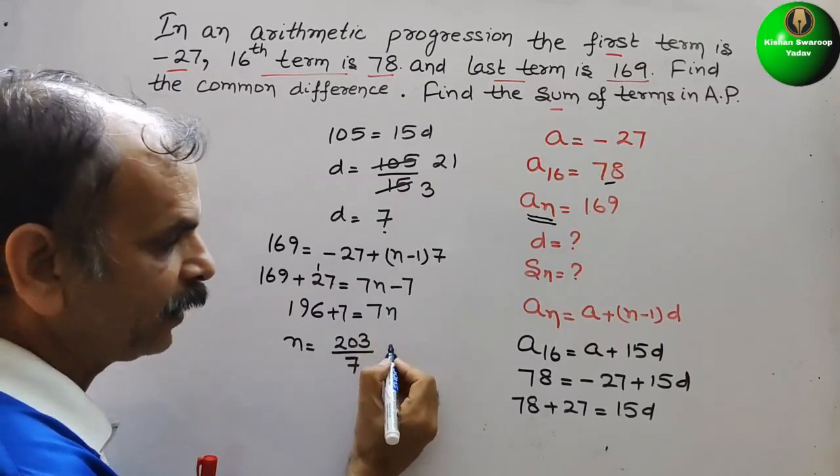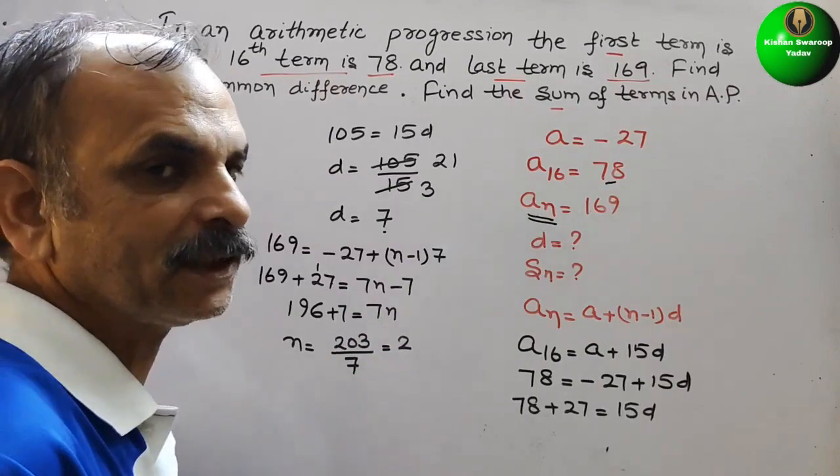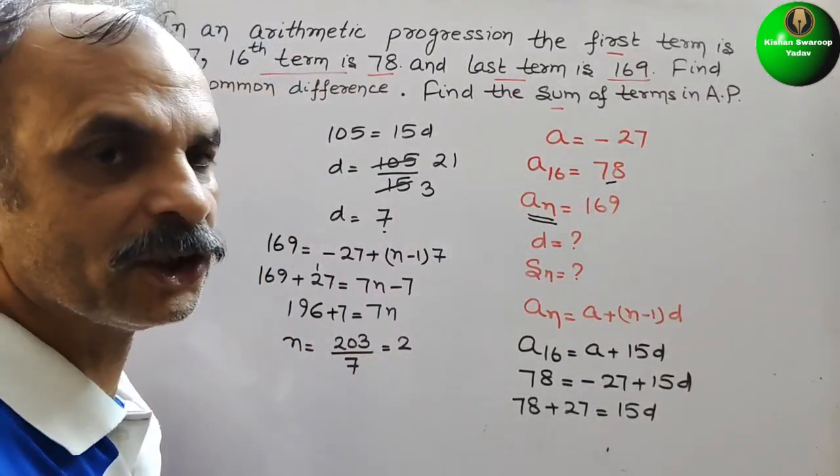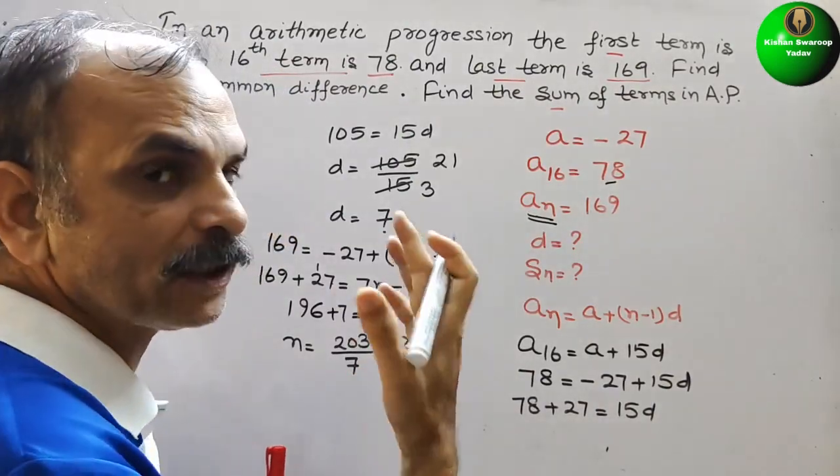Now reduce it by 7. So you will get 2 times is 14, remaining is 6. 6 and 3 is 63, that means it will go in 9 times. So now we can say N is 29.